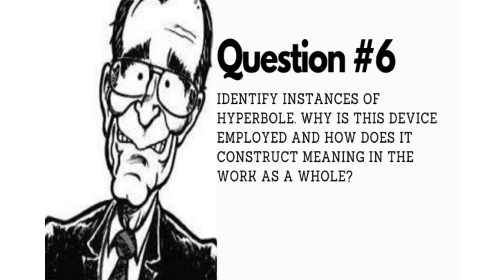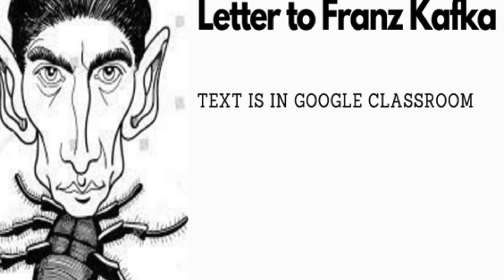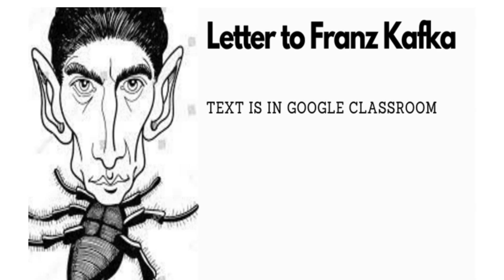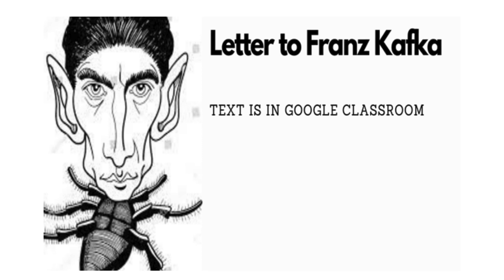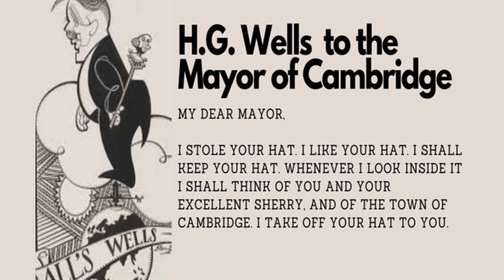Very cool. The other texts and their corresponding questions are in the description below. We have a letter Henry Rollins wrote to bands he was playing with saying "get on stage on time" — that's rhetorically loaded. Another one is a fan letter to Franz Kafka saying he doesn't understand Metamorphosis, bought copies for family who also don't get it, and — to save face because he has a doctorate — asks Kafka to explain it, even though Kafka never disclosed the significance. Another is Ayn Rand's response to Cat Fancy, and the Cat Fancy editor who asked her why she was subscribing. And then HG Wells to the mayor of Cambridge, a very short piece right there on the slide.